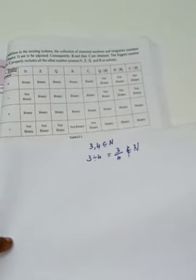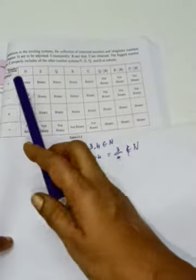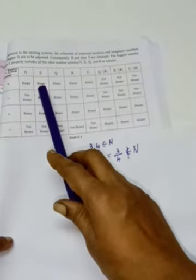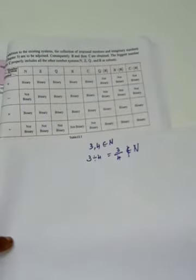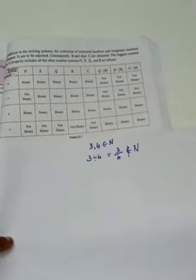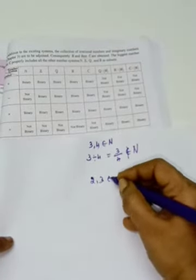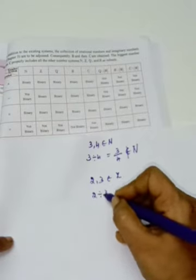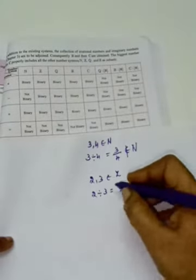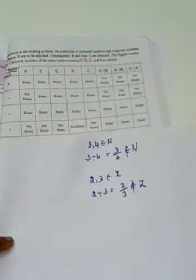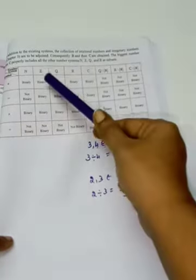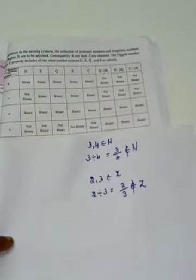For the set of integers Z: plus is a binary operation since the sum of two integers is an integer; subtraction is also a binary operation on Z; multiplication is a binary operation since the product of two integers is an integer. But division is not, because for example 2 divided by 3 equals 2 by 3, a fraction that does not belong to the integers.